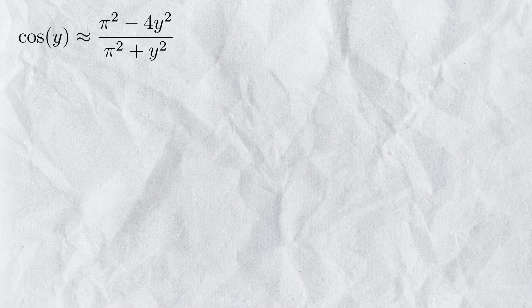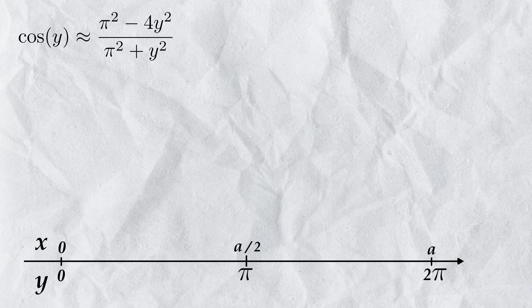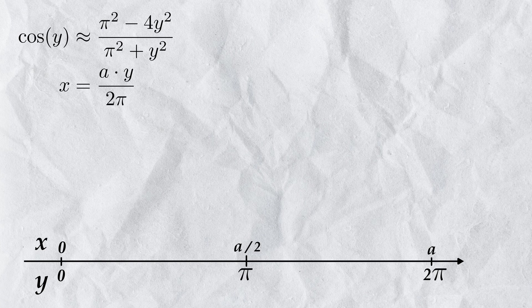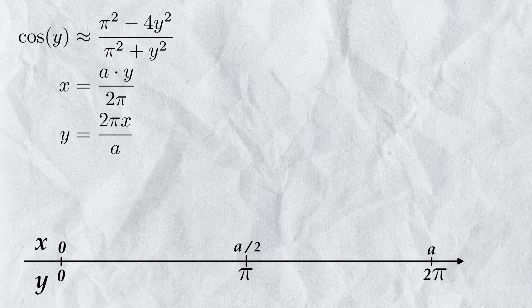We want to be able to use an input x that goes from 0 to some constant a instead, where x equaling a means a full rotation. So x equals a times y divided by 2 pi. Or inversed, y equals 2 pi times x divided by a.